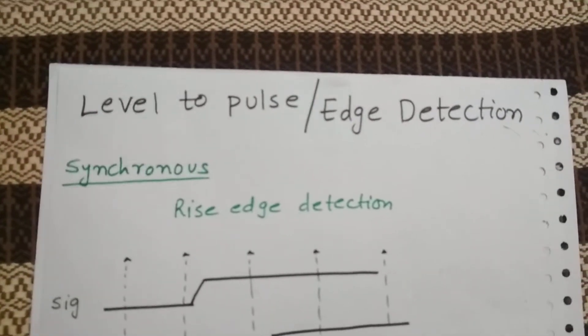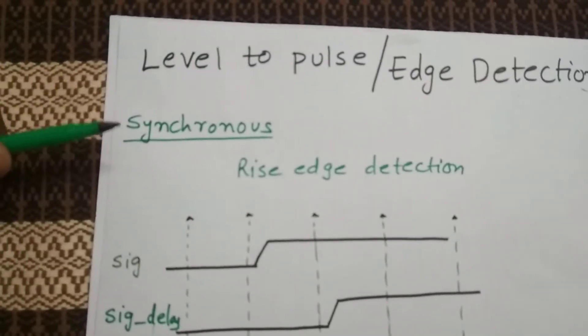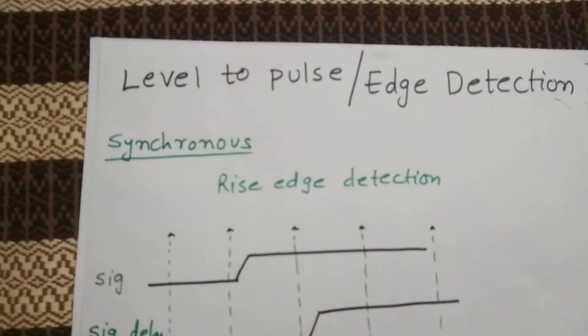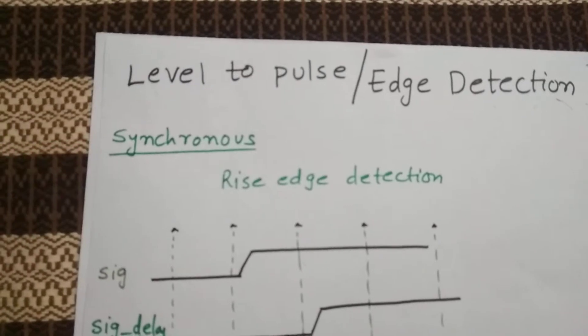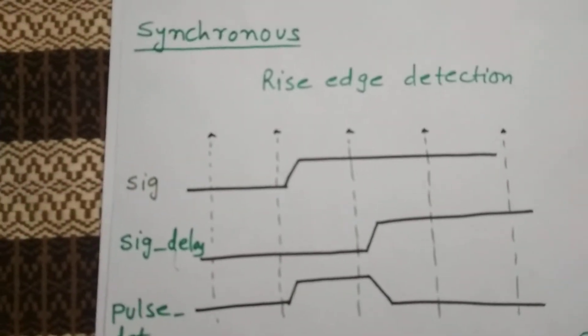Today's topic is level to pulse converter or edge detection. We have synchronous level to pulse converter and asynchronous level to pulse converter. In synchronous it is synchronous with the clock domain. Let's consider a small example how it's done.